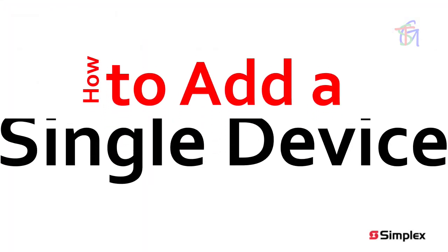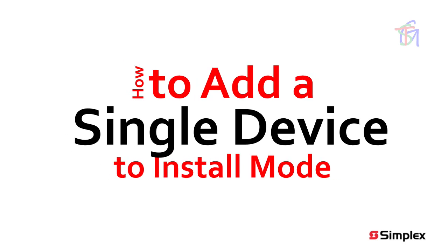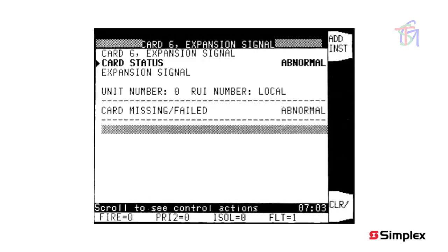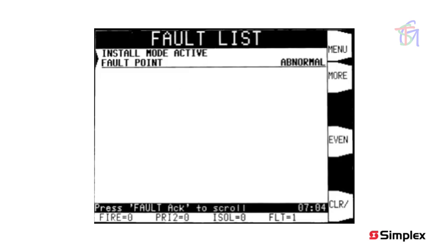Devices can be added individually to the install mode list. Note that this requires being logged in at level 3. The example fault list shows a fault from a missing slave card in the panel. If necessary, move the highlight on the display to the missing card using the up, down, page up, or page down keys. Press the more soft key for more info. Move the highlight down to the card status line, and a soft key option 'add' will appear. Pressing this soft key will add this point to the install mode list and display an accepted screen briefly. Pressing the fault acknowledge key will show the fault list, now with a single entry.